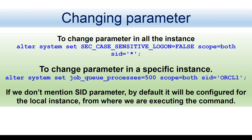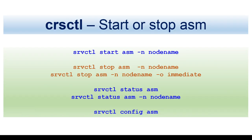You can start ASM using SRVCTL start ASM, stop ASM using stop ASM, see the status, and see the config of ASM using SRVCTL command. Remember: sometimes SRVCTL stop ASM will not work because ASM has hard dependencies. In that case, you can stop the ASM using stop HAS or stop CRS services.